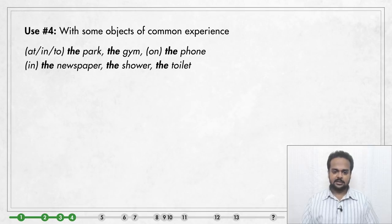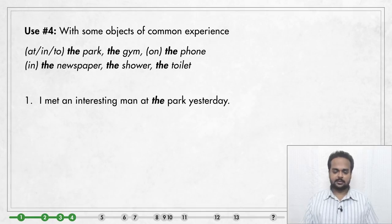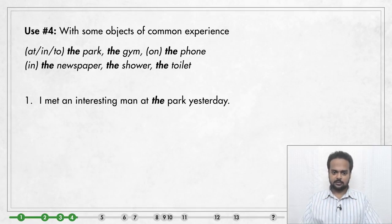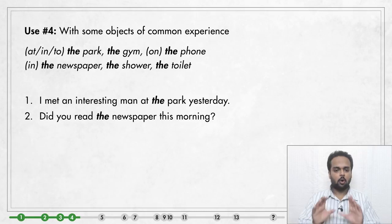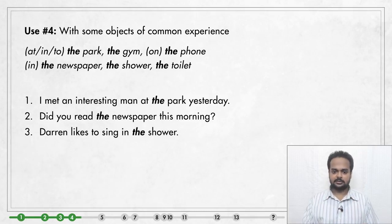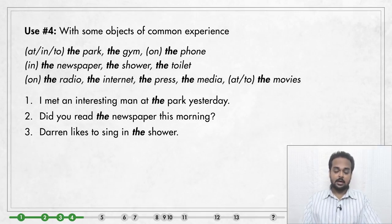Use number four: talking about objects of common experience. We say these are objects of common experience because we all experience them in our lives. For example: 'I met an interesting man at the park yesterday' — you may not know which park, but it doesn't matter. 'Did you read the newspaper this morning?' — I don't care which newspaper, I just want to know if you read one. 'Darren likes to sing in the shower.'